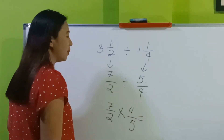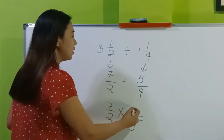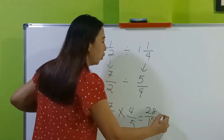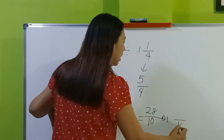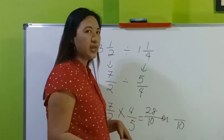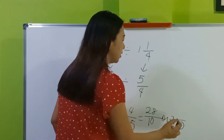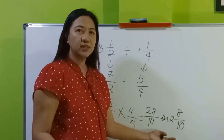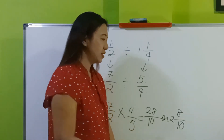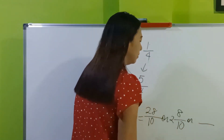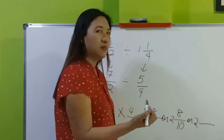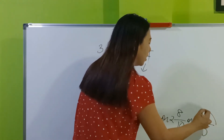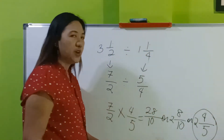Follow the steps in multiplication of fractions. 7 times 4 is 28, 2 times 5 is 10. How many tens are there in 28? We have 2, and the remainder is 8, so 2 and 8 tenths. Can you still simplify this? Yes — 8 divided by 2 is 4, 10 divided by 2 is 5. So the final answer is 2 and 4 fifths.